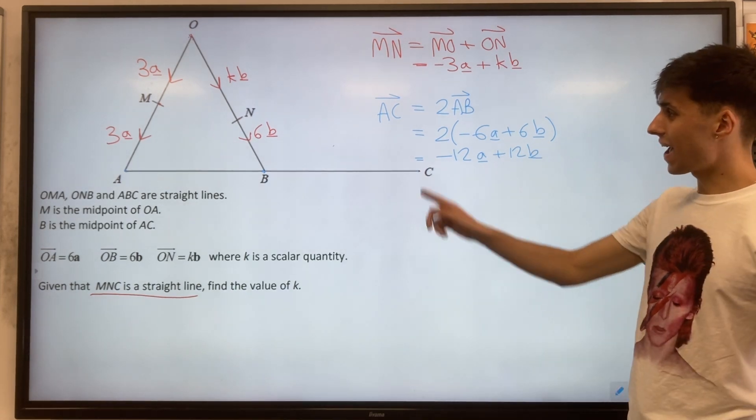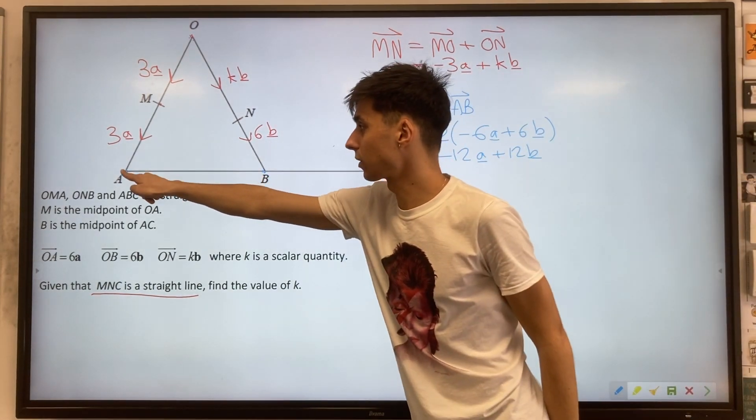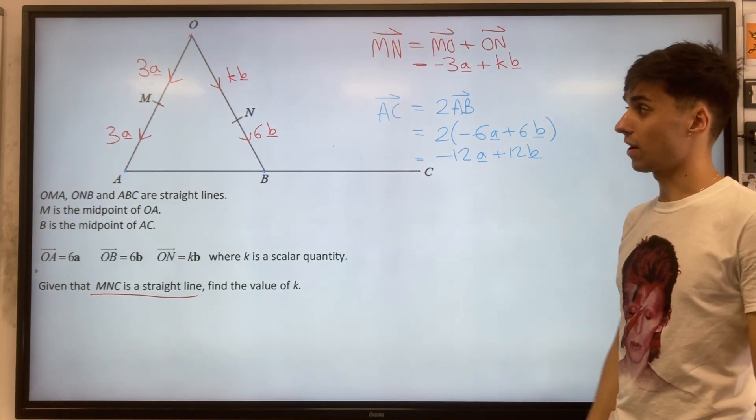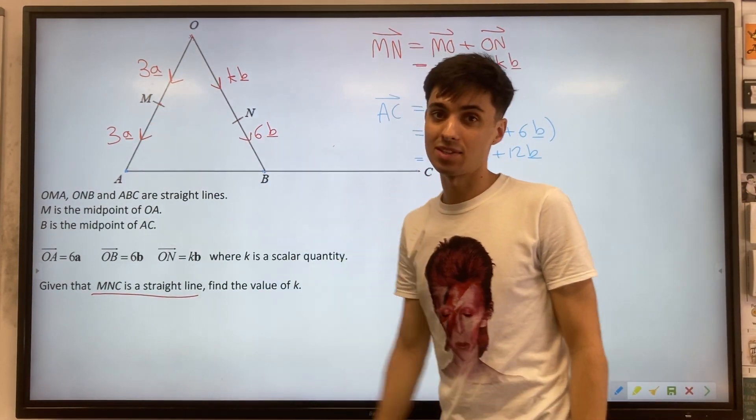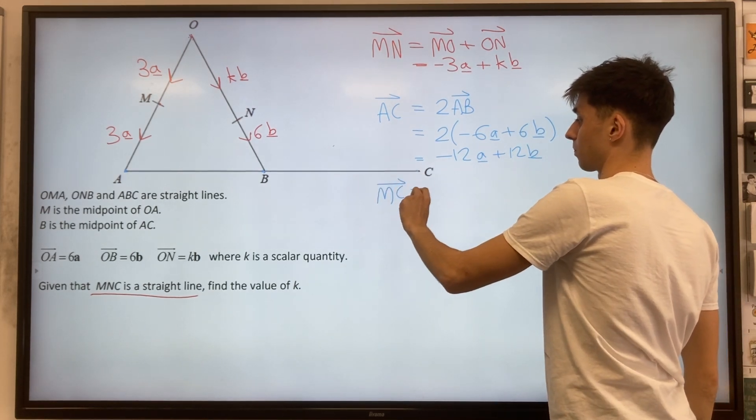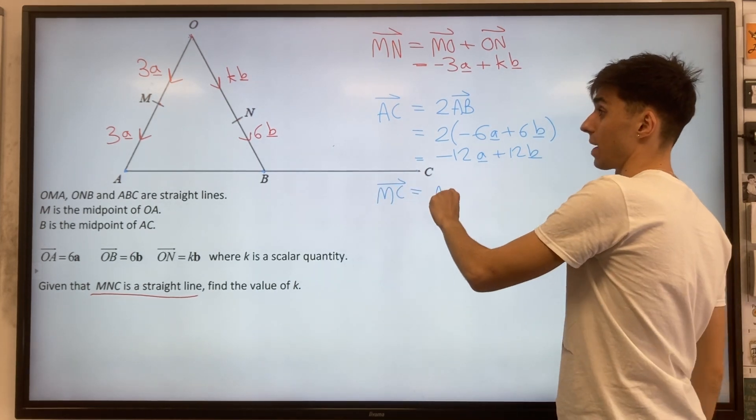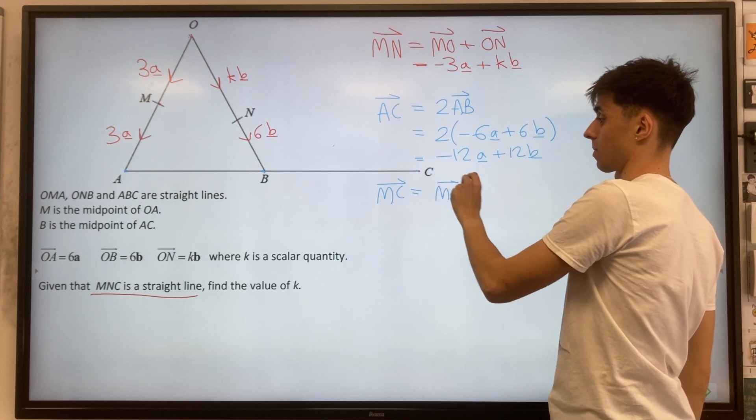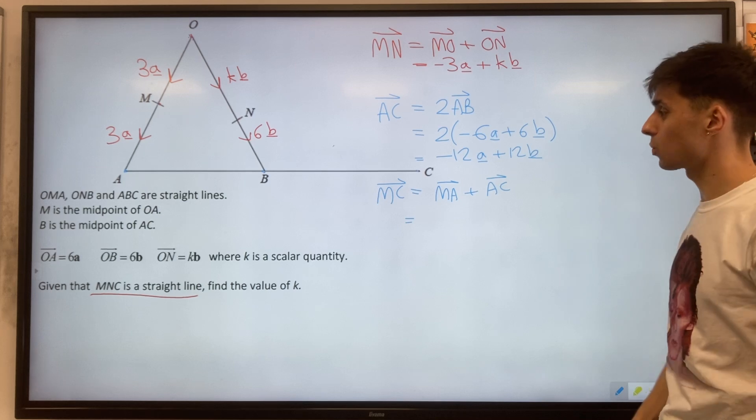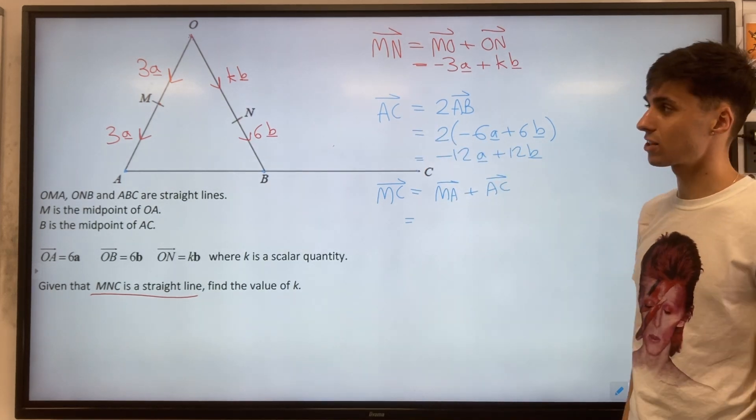But remember, that's for AC. So that's travelling along this line from A to C. We would like to find MC. So I'm going to write down below MC. But we need to go from M to A and then from A to C.